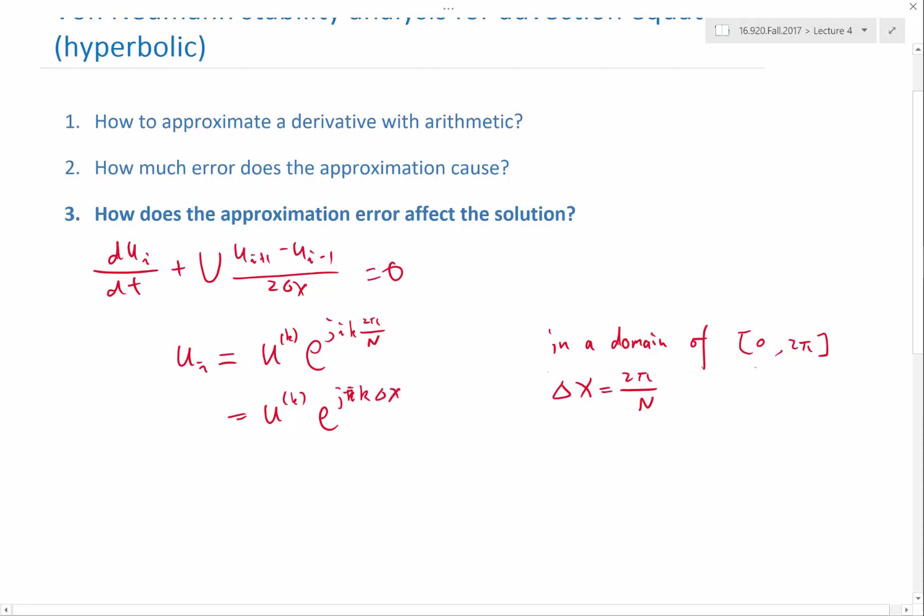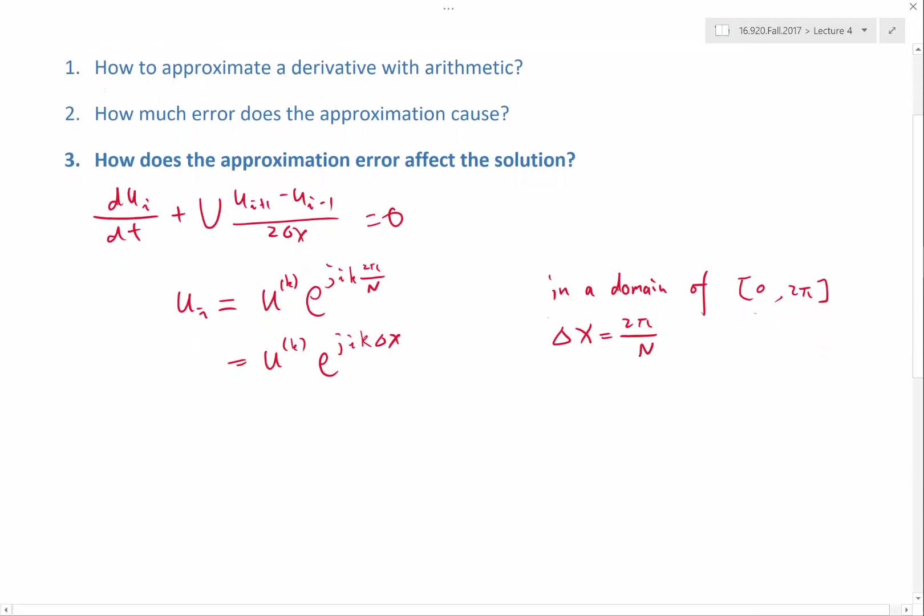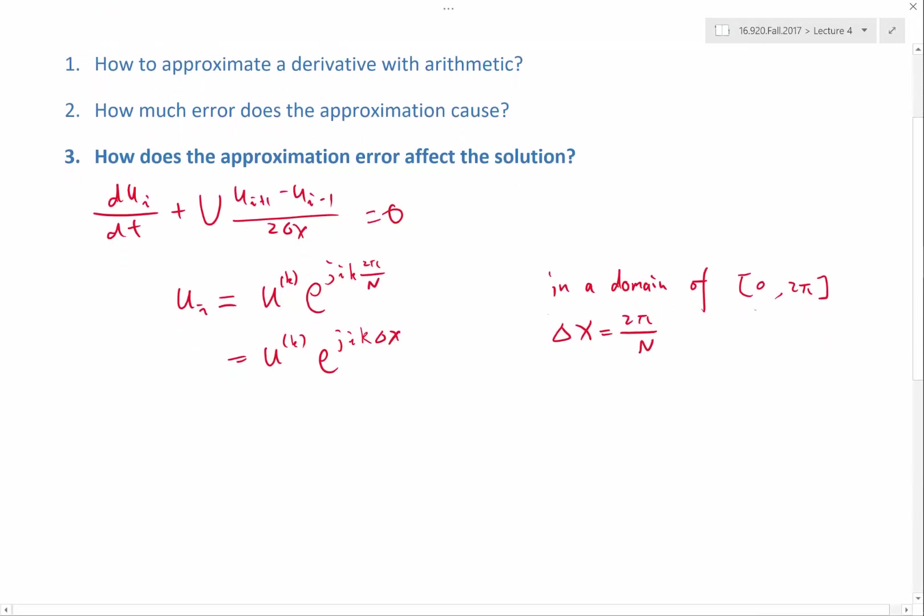So with that Fourier series, we can plug into this equation and derive what is the amplification factor. So U_{i+1} minus U_{i-1} divided by 2 delta x. Let's not forget this big U. I forgot that last time. It would be equal to big U times a small u^(k). So that is common with respect to both of these. And then we get something over 2 delta x.